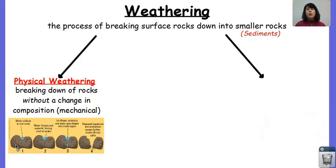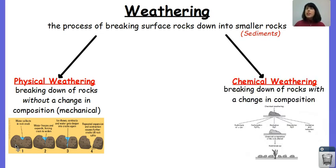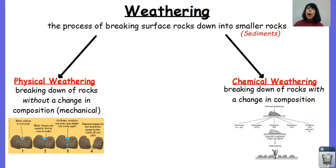Another way that we can break down rocks is through chemical means, or chemical weathering. This is when we break down the rocks and there is a change in composition. We can see in this diagram that a bunch of different outside forces can change that rock's composition, and then it can become something that weathers more easily.